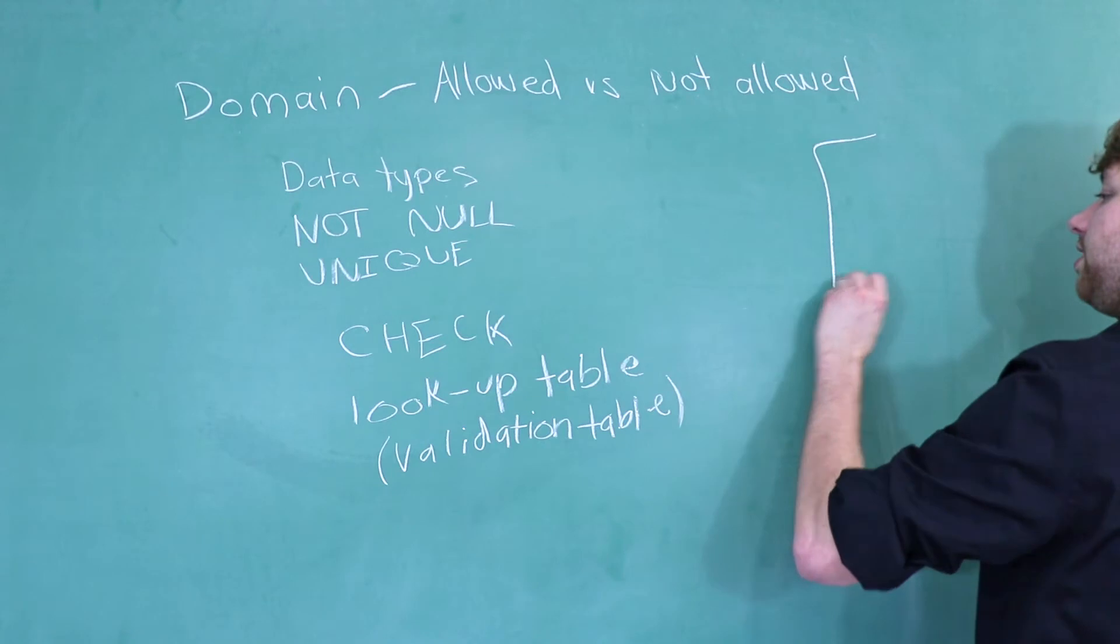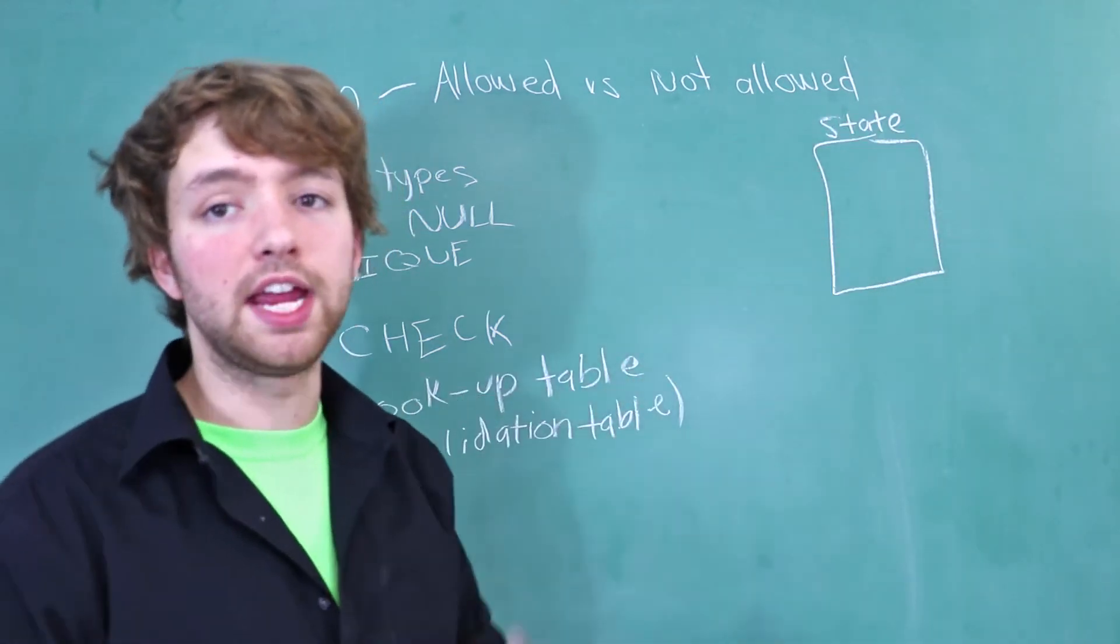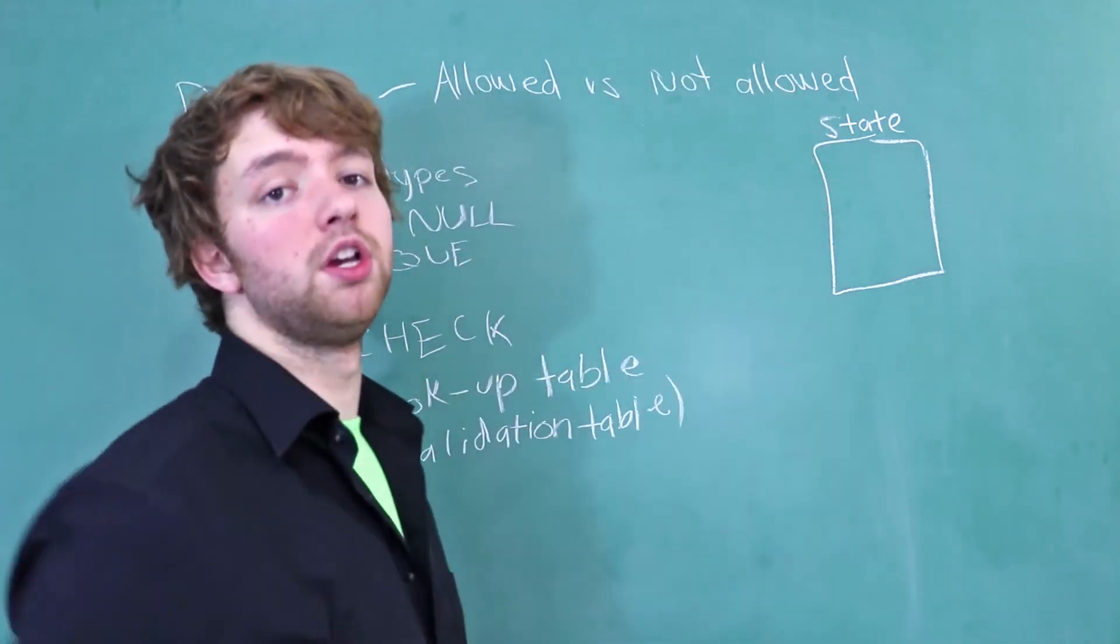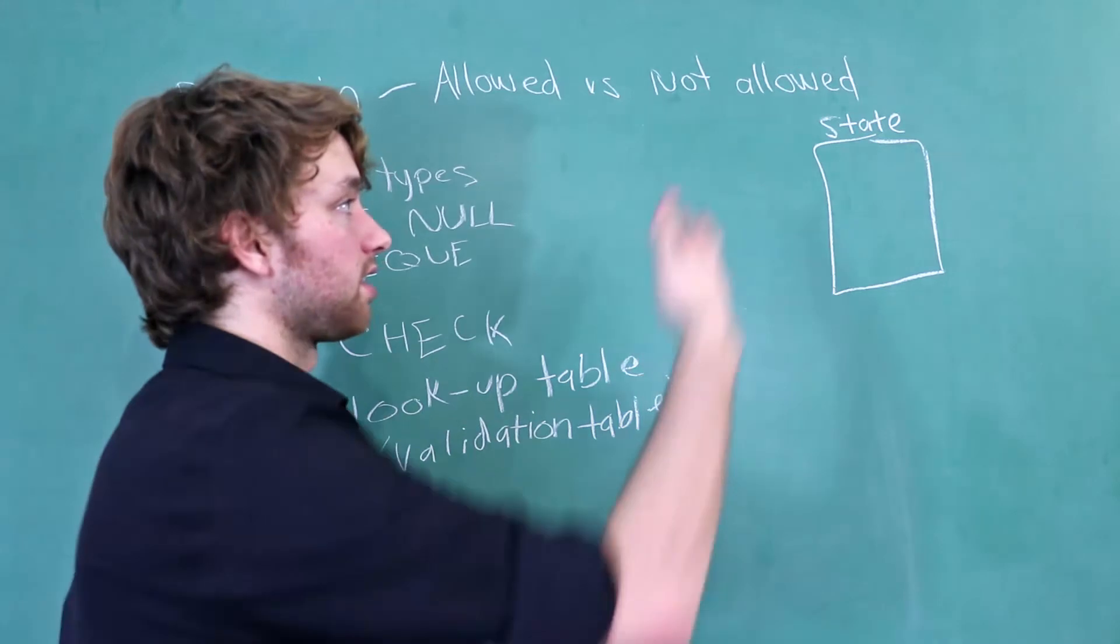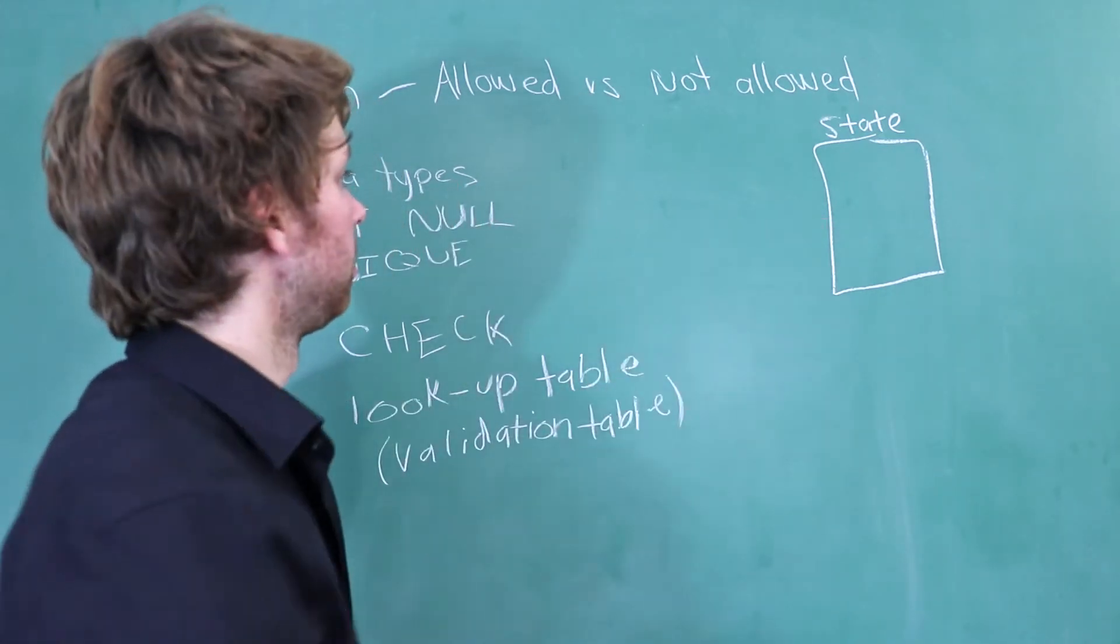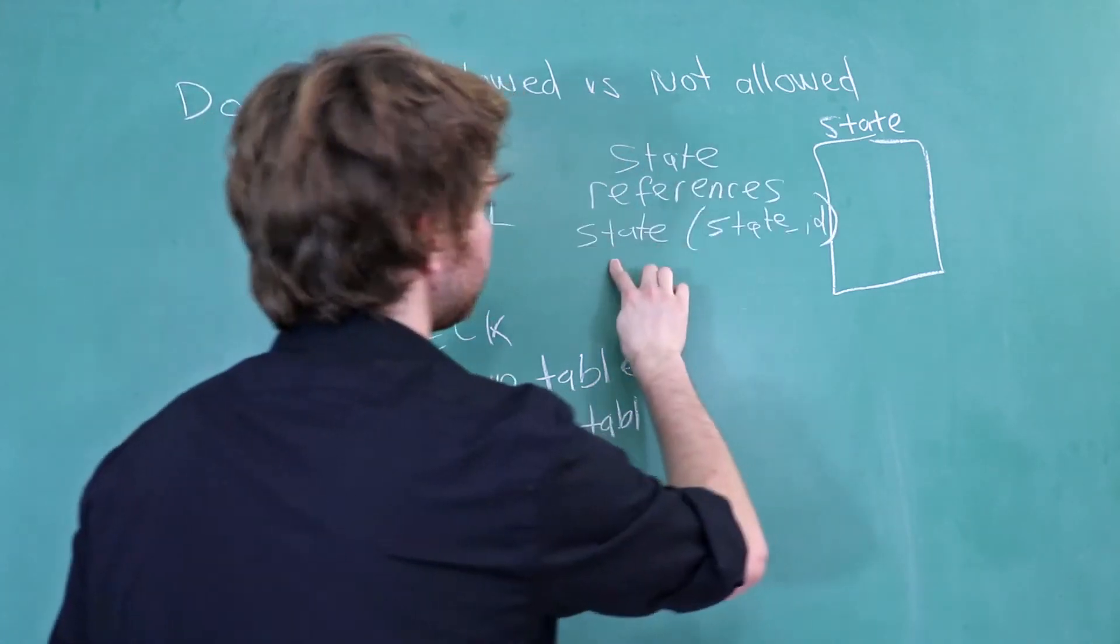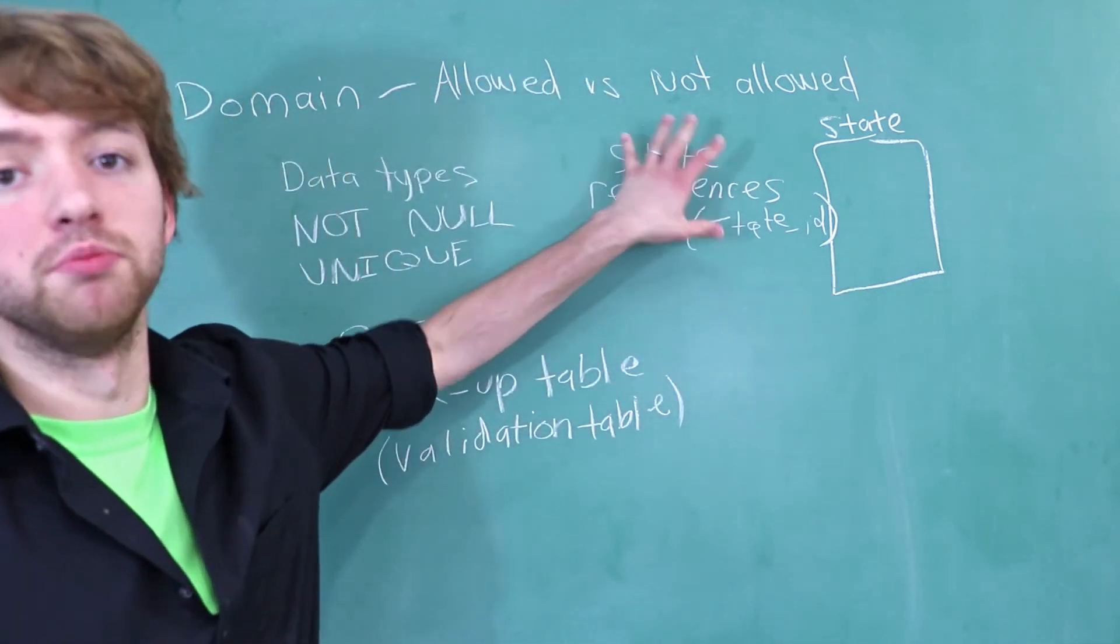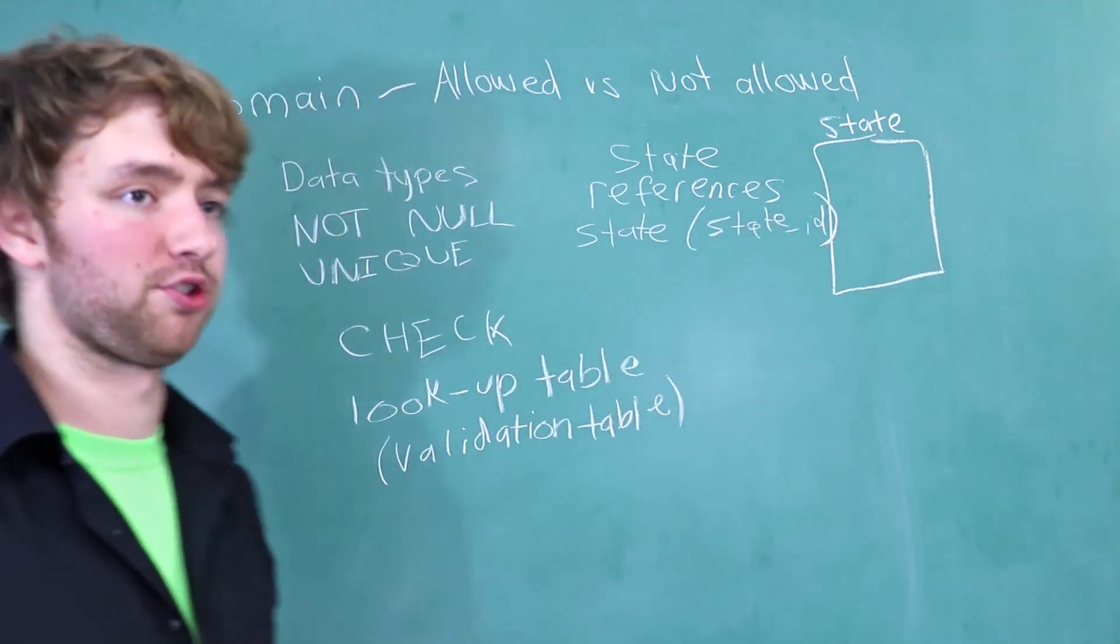So if over here you have a state table, and then in this table every single row is a state that someone could live in, well then you could only allow those values using a foreign key. So this kind of goes back to the one-to-many relationships. If you decide to set it up this way, you can force a column to have a value in that state table. So over here you could have a state column and you could say this references the state table and then the state ID column. And now every single value in this column is going to have to be a row in this state table. So that's an example of a validation table.